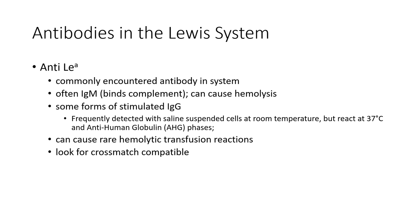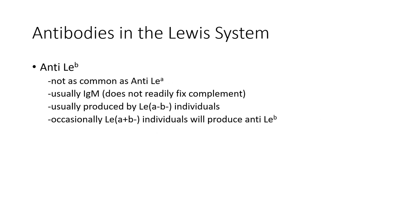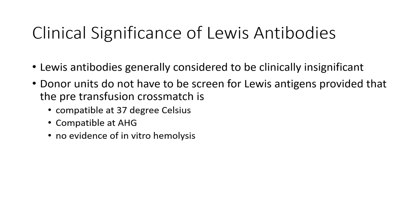We should use cross-match compatible cells for transfusion. Anti-Lewis B is not as common as anti-Lewis A. It is usually IgM and does not fix complement. It is usually produced by Lewis A and B negative individuals. Occasionally a Lewis A and B negative individual will produce anti-Lewis B, which would be unusual since they have the Lewis gene. Lewis antibodies are generally considered to be clinically significant and donor blood negative for the antigens should be selected. The unit should be compatible at 37 degrees Celsius AHG and there should be no hemolysis.